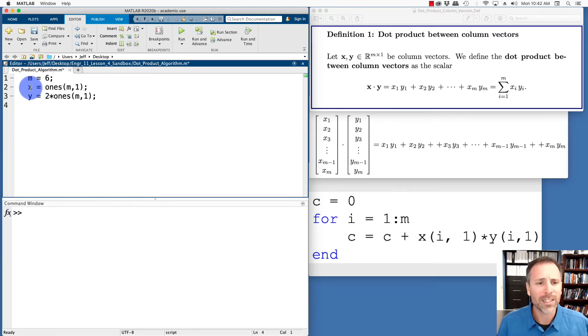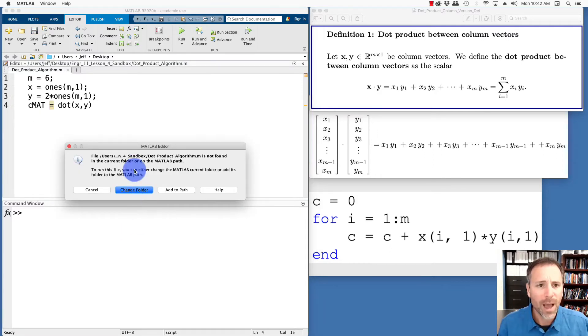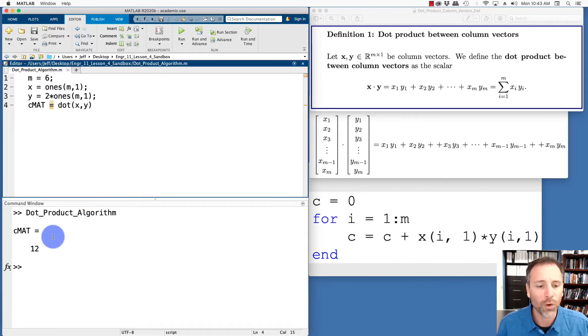All right, so now what we want to do is take the dot product between those. Of course, we have MATLAB's version of the dot product, which we could use the dot product function, so we can take x, y, and this gives us a sense of what this should be. Right now MATLAB's upset because I want to run this and I'm not in that folder, so I'm going to go ahead and change folders. Check that out. So the constant output of the dot product produced by MATLAB's dot product function is 12. That makes sense. We have 6 entries. These are all 1's. These are all 2's. What happens when we add 2 to itself 6 times? Well, we get 12.